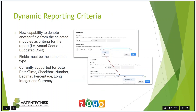Dynamic reporting criteria is another exciting one. We now have the capability to not only specify a certain value when building report criteria, but instead of providing a fixed value, we can choose another field within the system — as long as they're the same data type, like comparing a currency field to a currency field, or a date field to a date field. So if you wanted to compare actual cost versus budgeted cost, or find projects where you've overrun your timeline, this would be a great way to do that.